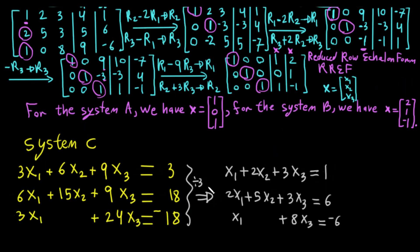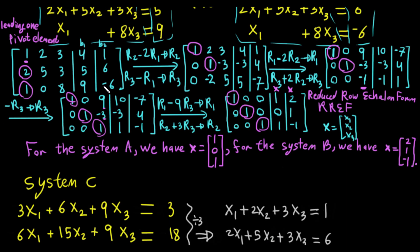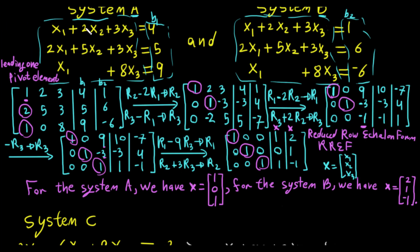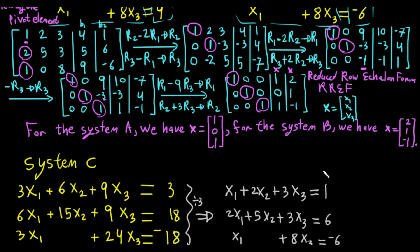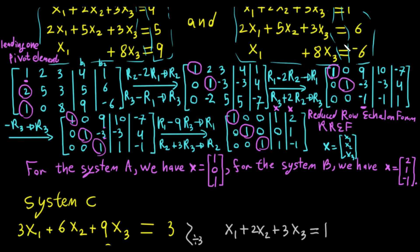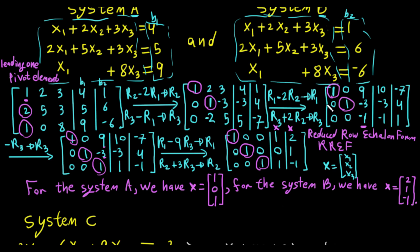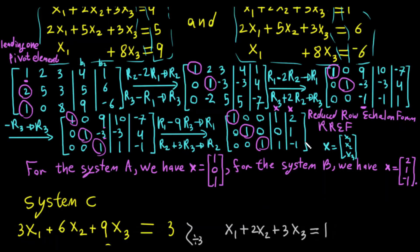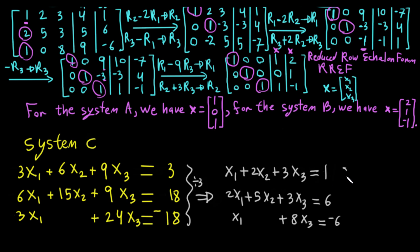Since we now have the same coefficients as System B — that is, 1, 2, 3 and 1, 2, 5, 3, 6 and 1, 8, negative 6 — this system is the same as System B.